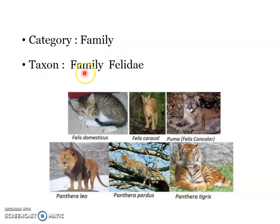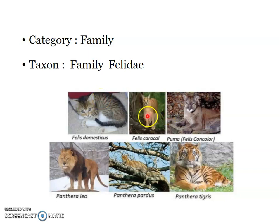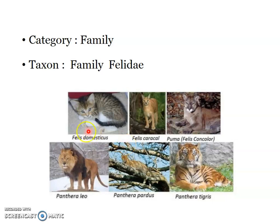Another example: the category is family, and the specific taxon is family Felidae, which includes Panthera and its three species, then different species of Felis — Felis domesticus is the common cat, Felis caracal, and Felis conqueror, and puma — all coming under the same family. The category genus here includes both genus Felis and genus Panthera, which are two different genera or different taxa.